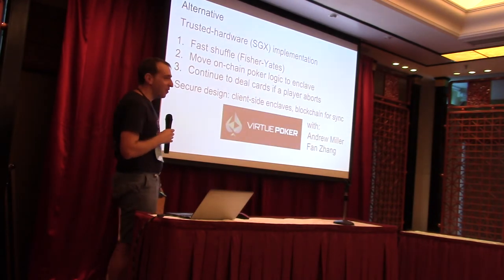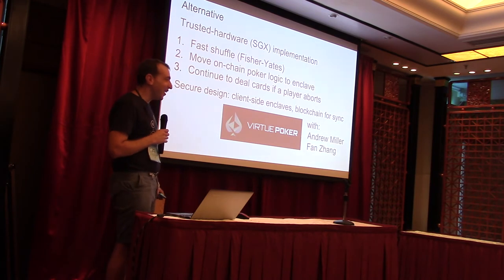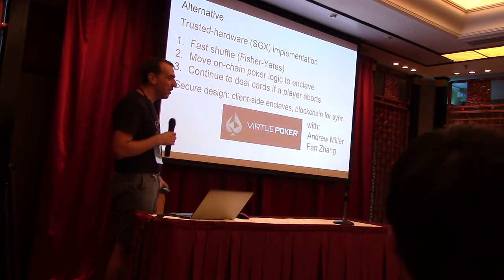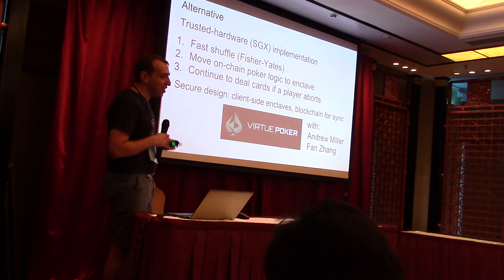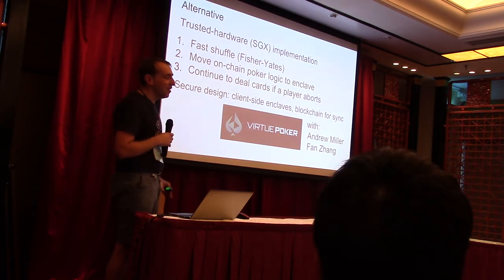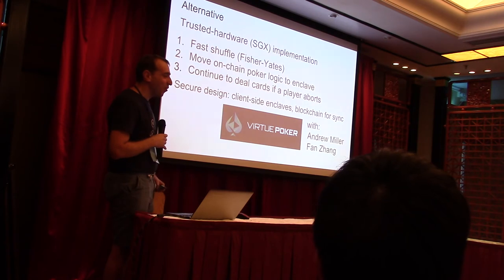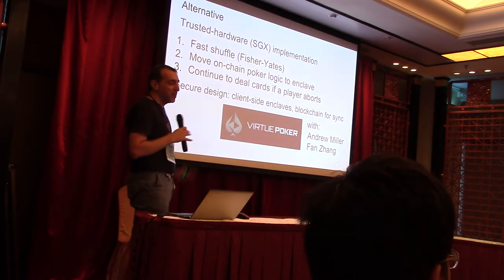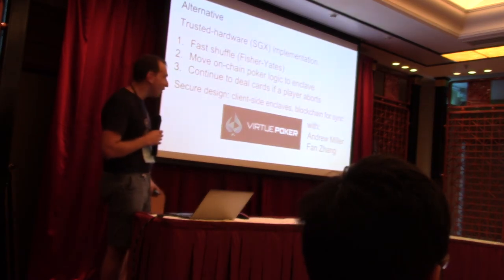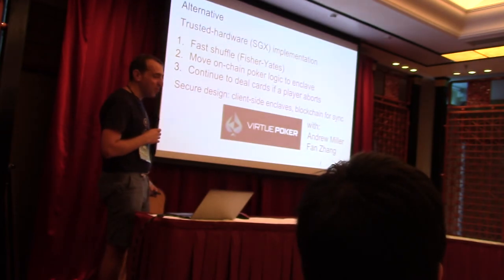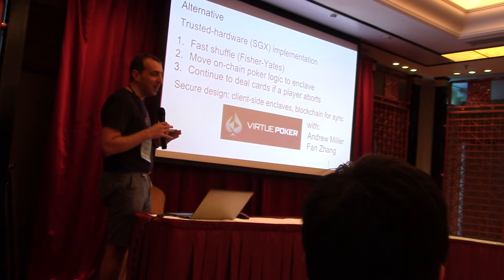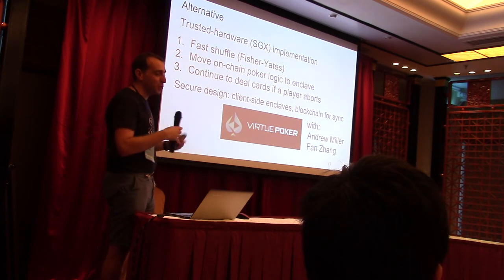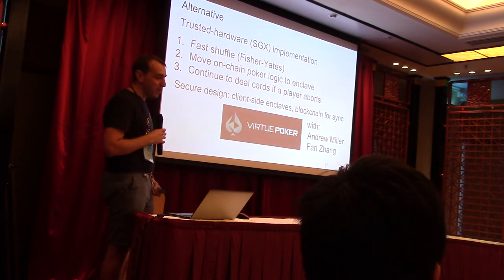An alternative design is using trusted hardware to implement poker, which solves all these problems. The shuffle becomes very fast — milliseconds. All the logic doesn't need to be on the blockchain; you move it into a secure enclave and on the blockchain you just verify signatures from the trusted hardware. Most importantly, this trusted party has all the secrets, so if one party aborts, the trusted hardware can continue giving cards and continue the game with the remaining parties.